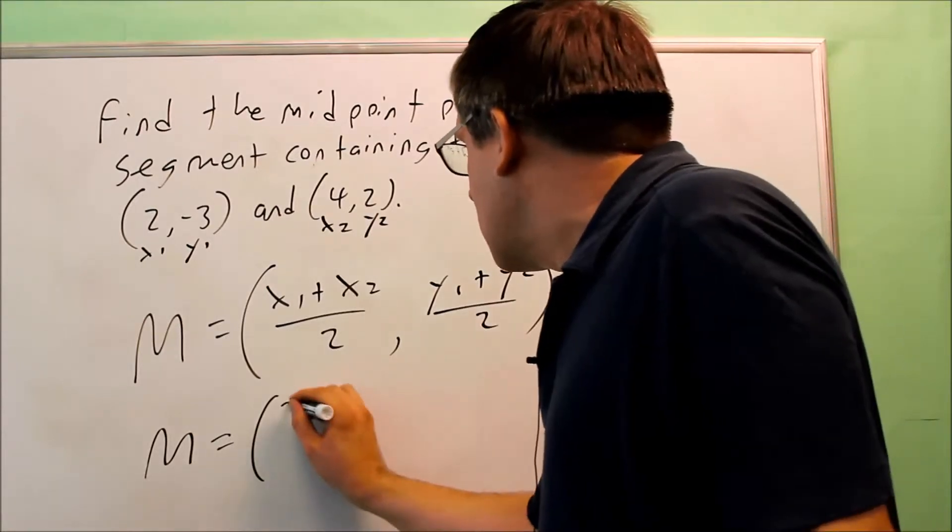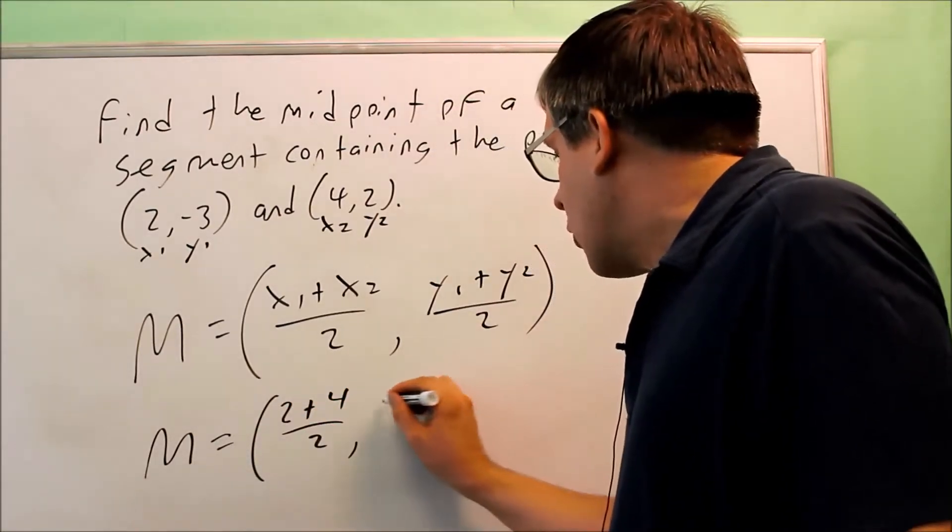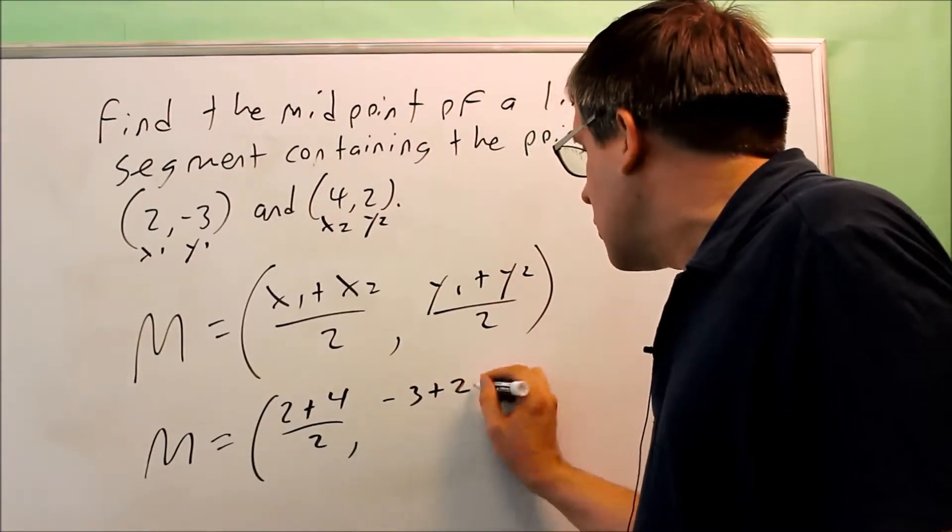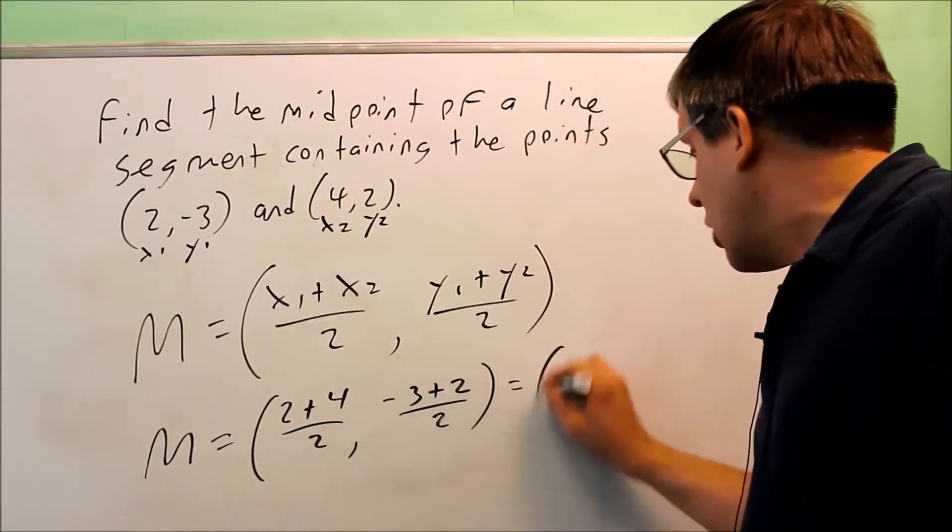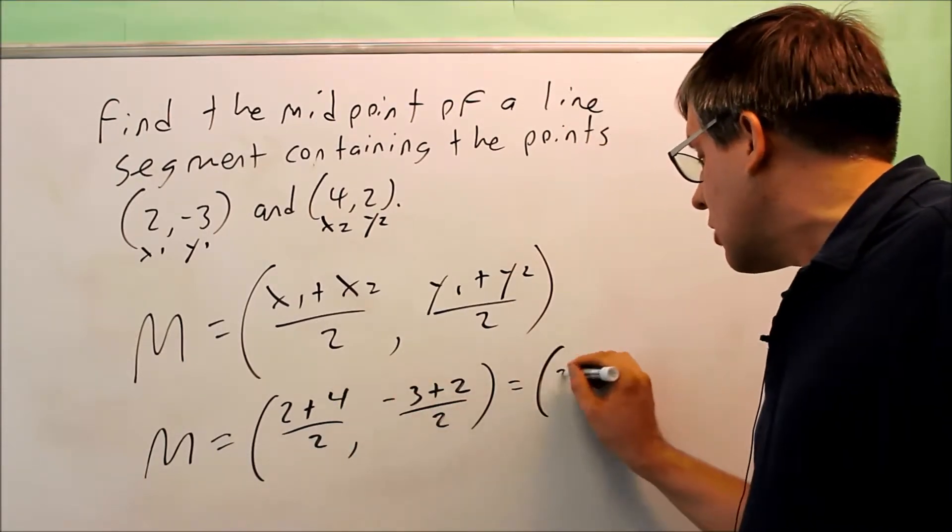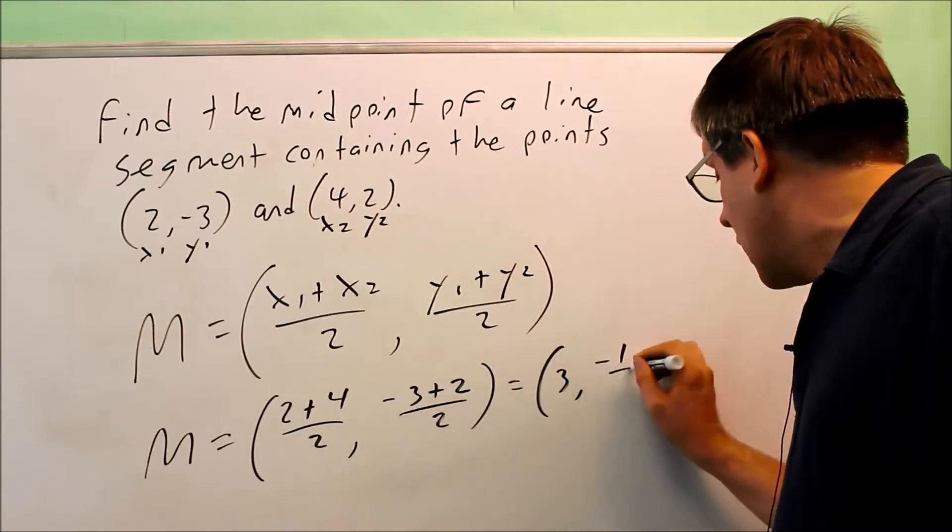So I have x1 plus x2, 2 plus 4, all that over 2, and then I have the average of the y values, negative 3 plus 2, all that over 2. And now I want to simplify these. So what I get is 6 over 2, that's going to be 3, and negative 3 plus 2 is negative 1, that's over 2.